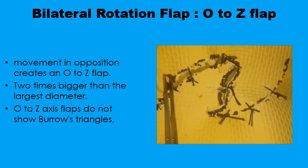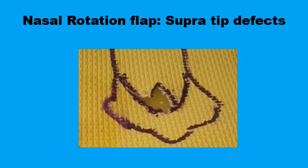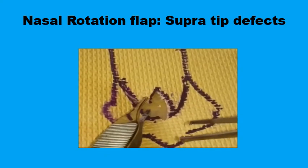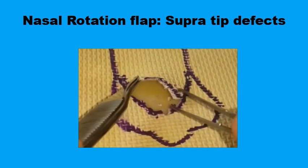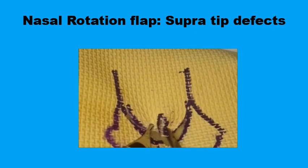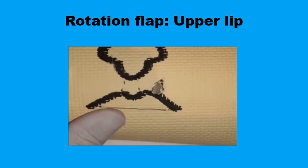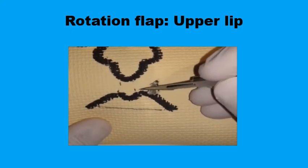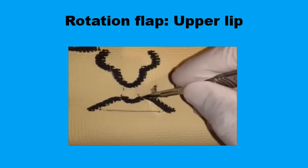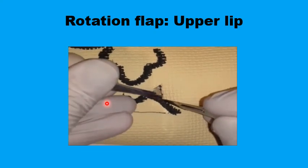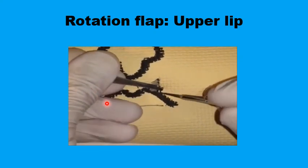That is the final Z-type closure. When bilateral rotation flaps are recruited from the same side of the lesion, the configuration becomes an O-to-T or A-to-T rather than O-to-Z. Both flaps are mobilized toward the midline, and the reconstruction takes the form of a T rather than a Z.